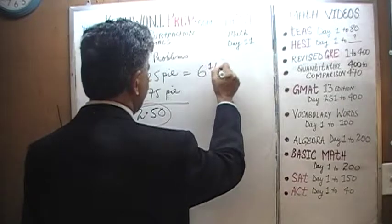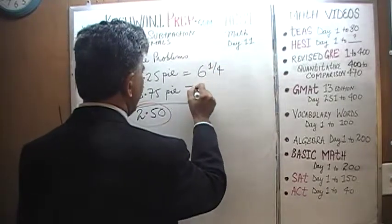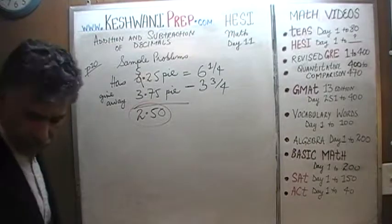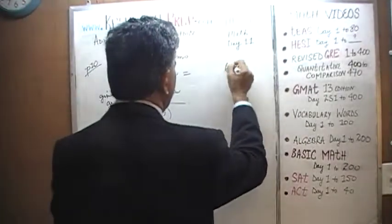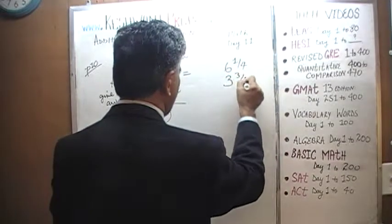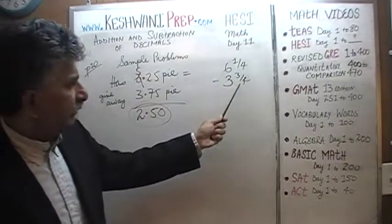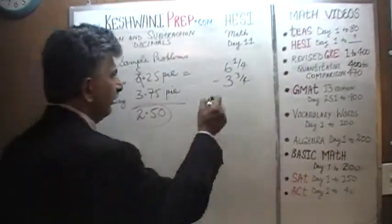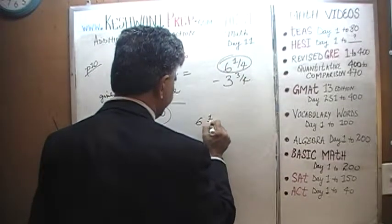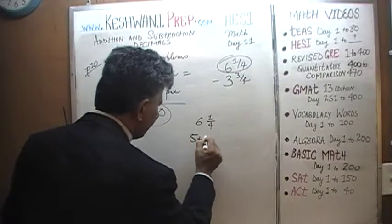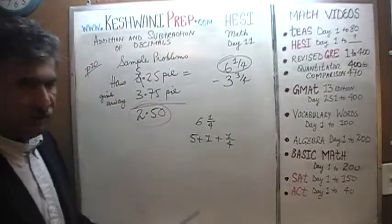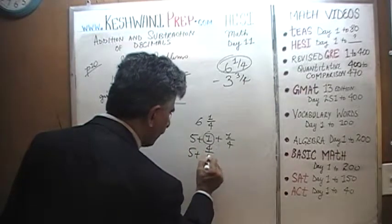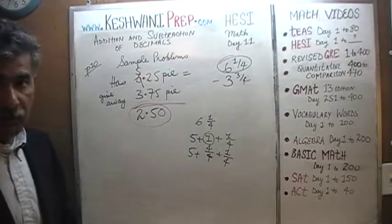Another way we could have solved this problem is to simply add them up. This is the same as 6 and a quarter minus 3 and 3 quarters. The problem is, we cannot subtract 3 quarters from just a quarter. So we have to do something here. Take this 6 and a quarter and let's write that as 5 plus 1 plus a quarter. That one in turn can be written as 4 quarters. Of course it can be written as 4 quarters, because 4 quarters make 1.